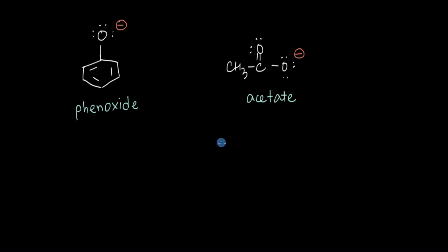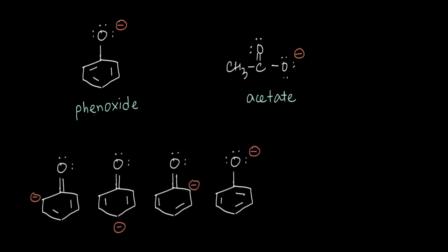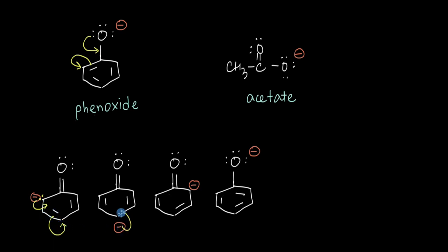Which of these should be more stable: the phenoxide ion or the acetate ion? If you draw the resonating structures of phenoxide, you will get four more resonating structures. The lone pair of this oxygen atom can come over here and the pi electrons can move over here, leading to additional resonating structures. We are going to get a total of five different resonating structures.